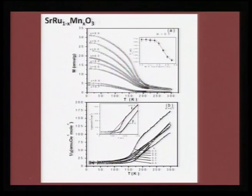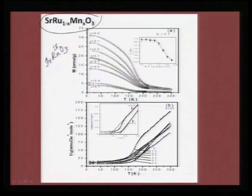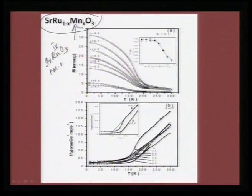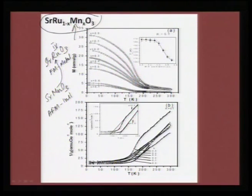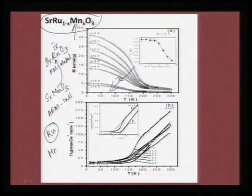Let us take another example of SrRuO₃, the parent compound where ruthenium is in 4+ state. Instead of doping ruthenium into manganite, we can now do a reverse doping where we put manganese into a known ruthenium oxide. In that case, SrRuO₃ is a ferromagnetic metal whereas SrMnO₃ is an antiferromagnetic insulator. If you keep on doping manganese into ruthenium, you would see there is a very strong ferromagnetic signal even up to 70 percent - you can see a ferromagnetic transition happening. There is a sustained Tc - this is very, very unusual. So there is something happening not only in ruthenium but also in manganese.